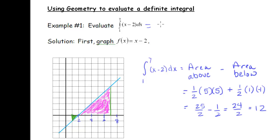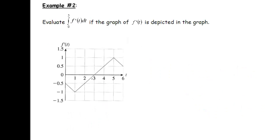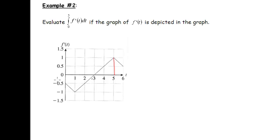So we get 25 halves minus 1 half, which is 24 halves, which equals 12. The value of our definite integral is 12. Now let's look at one last example, which is similar to the stock price example from the first video. We need to evaluate the integral from 0 to 5 of f′(t) dt. The graph of f′ is given, and remember the value of this definite integral equals the total change in the value of our function.